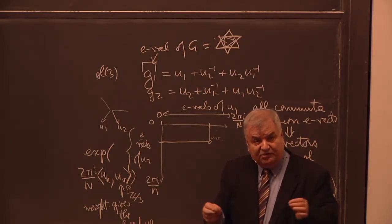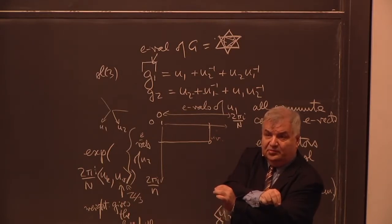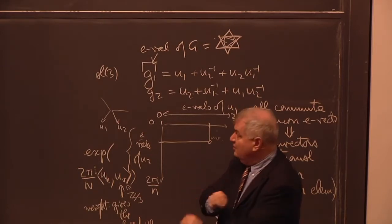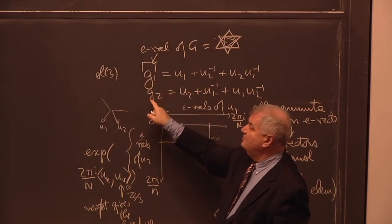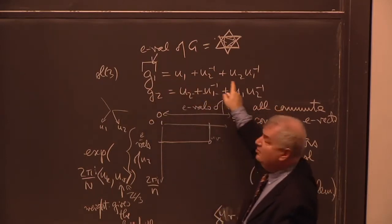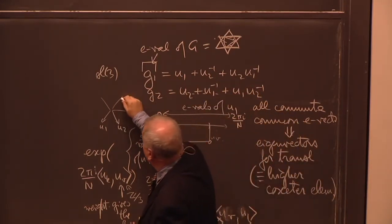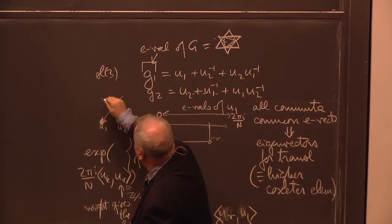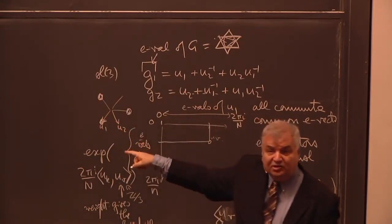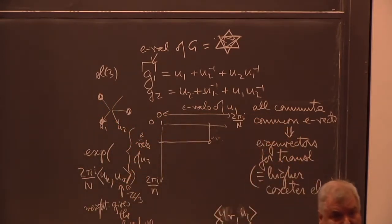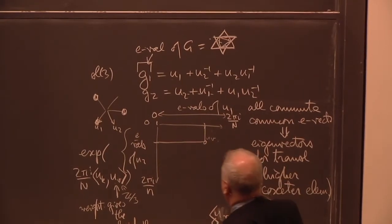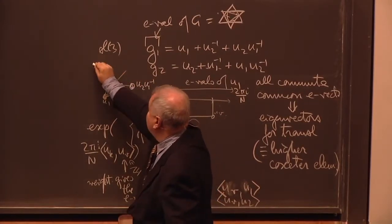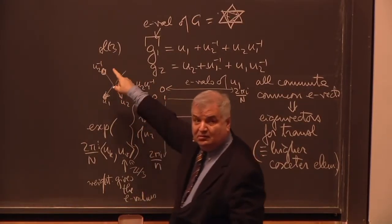Whenever you tensor two things, you can braid them to tensor in the opposite order, and they will give you the same byproducts. What we do is write this tensoring with the generators as a sum of unitaries according to the respective representations. For instance, for U1, we take this vector, this vector, and this vector, written multiplicatively. This is U1, this is U2 times U1 inverse, and this is U2 inverse.